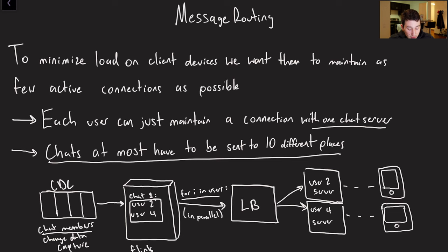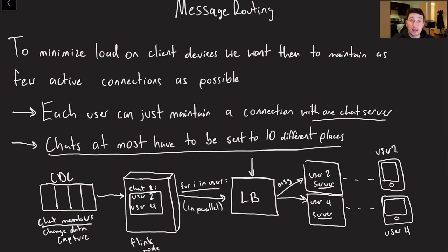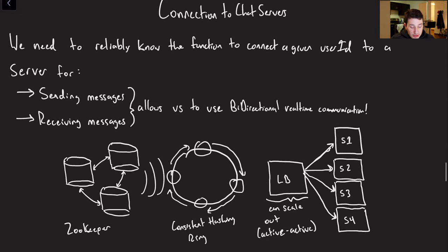Once we have that local cache of users within a group chat, for every user in the chat we can hit a load balancer in parallel, which routes the message to whichever chat server that user is connected to. The question then becomes: how does the load balancer know where everyone is connected?